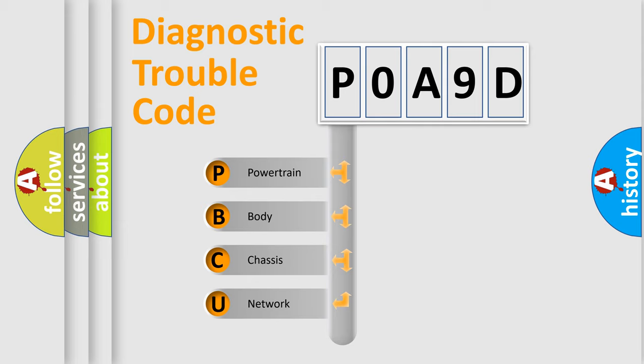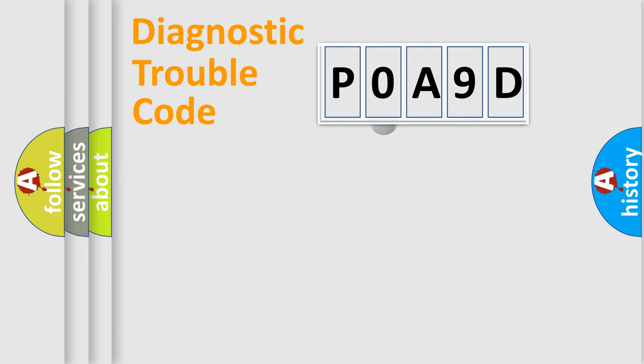We divide the electric system of automobile into four basic units: Powertrain, Body, Chassis, and Network. This distribution is defined in the first character code.